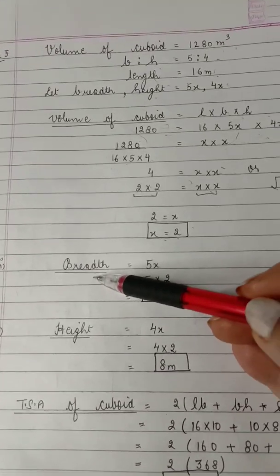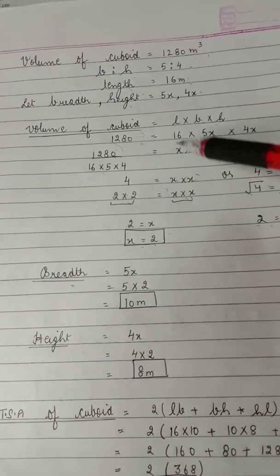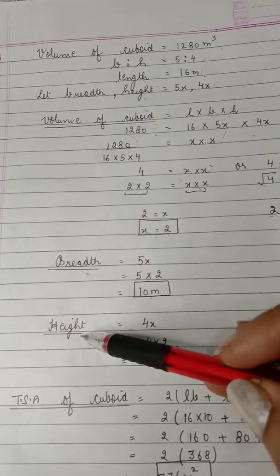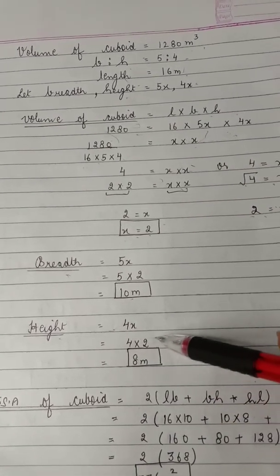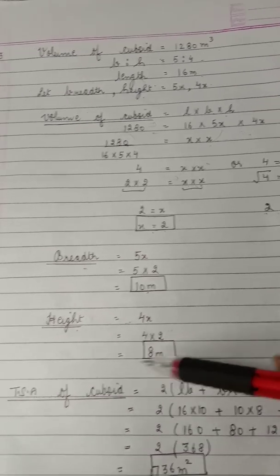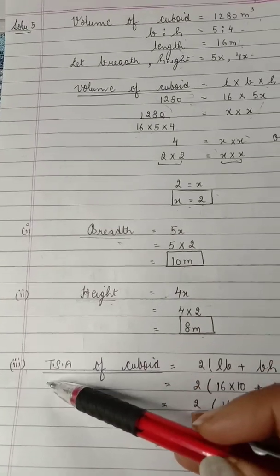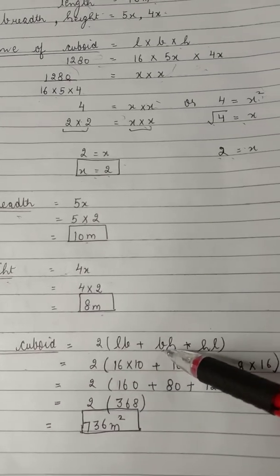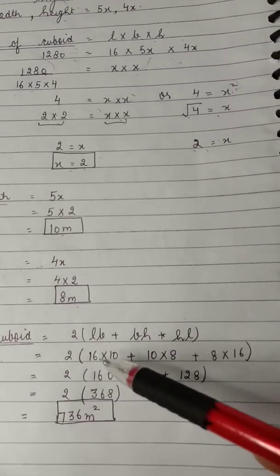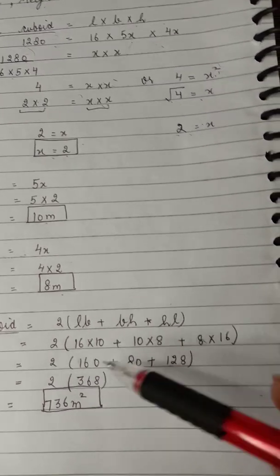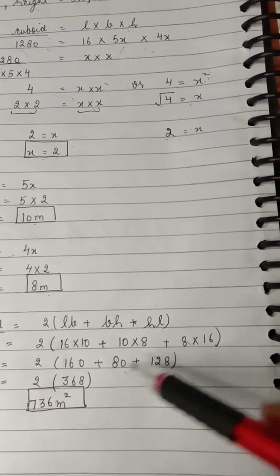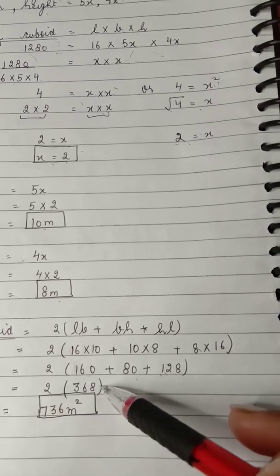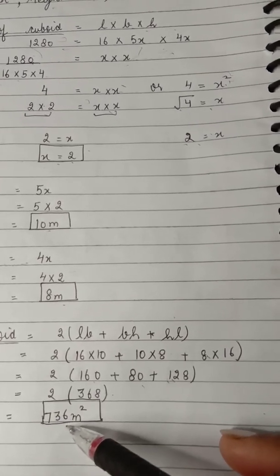With x = 2, breadth = 5x = 5 × 2 = 10 meters, and height = 4x = 4 × 2 = 8 meters. Finally, for the total surface area of the cuboid, apply the formula 2(lb + bh + hl). Putting in the values gives 160 + 80 + 128 = 368, and 2 × 368 = 736 meter square.